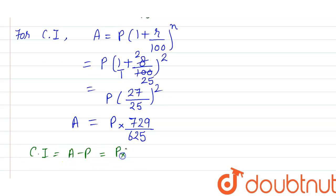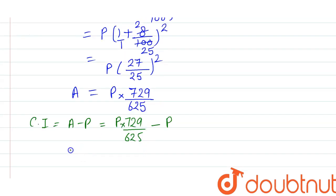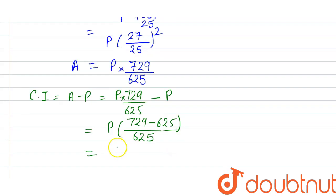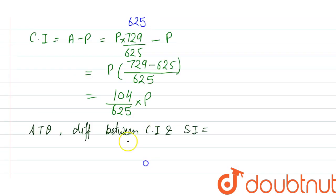So amount we are getting 729/625. Now compound interest - that will be A minus P, that is P(729/625) - P. Take out P common and take LCM 625. It will be 729-625 = 104/625×P.